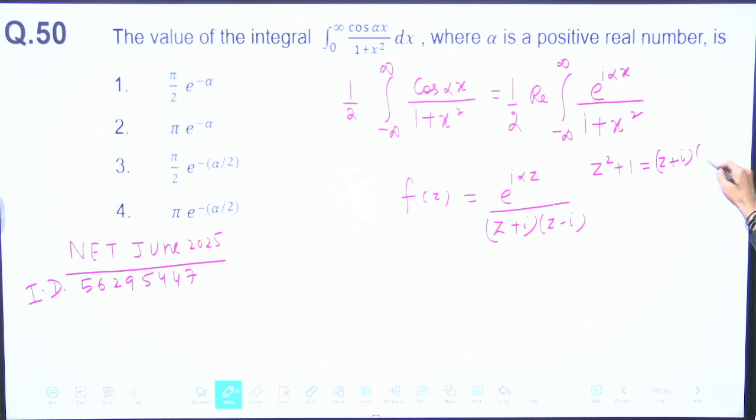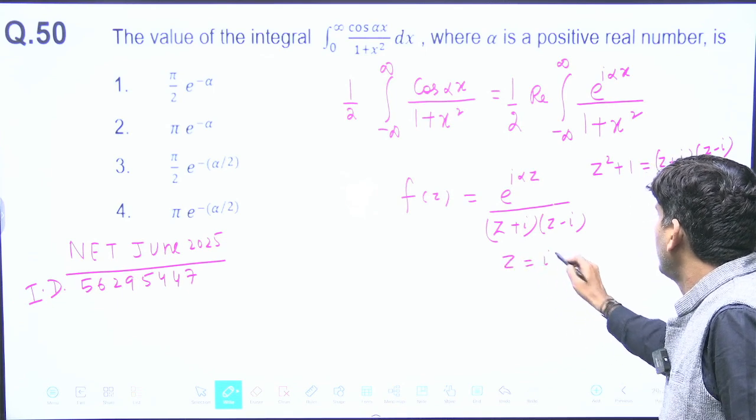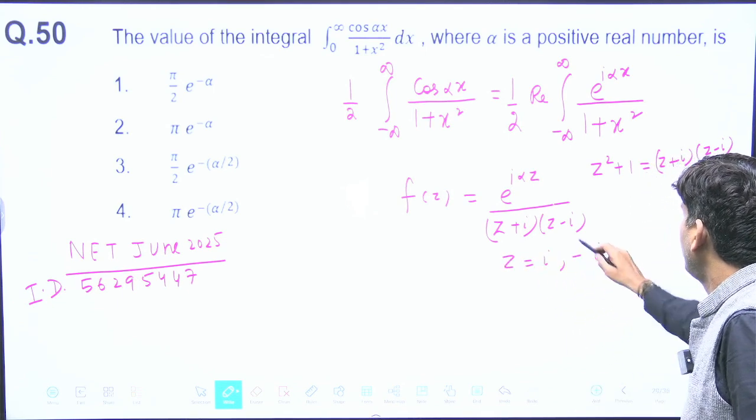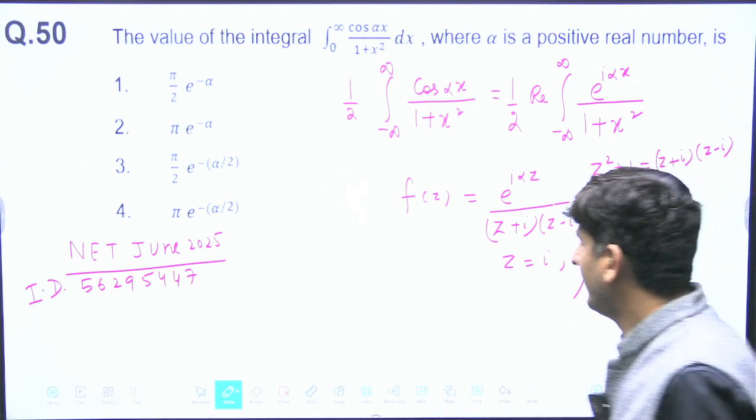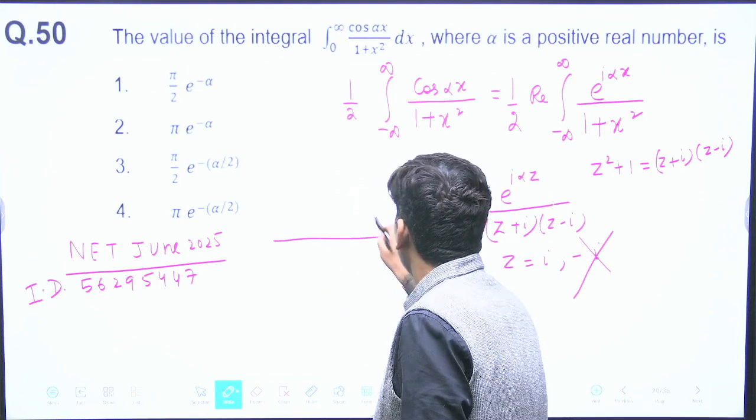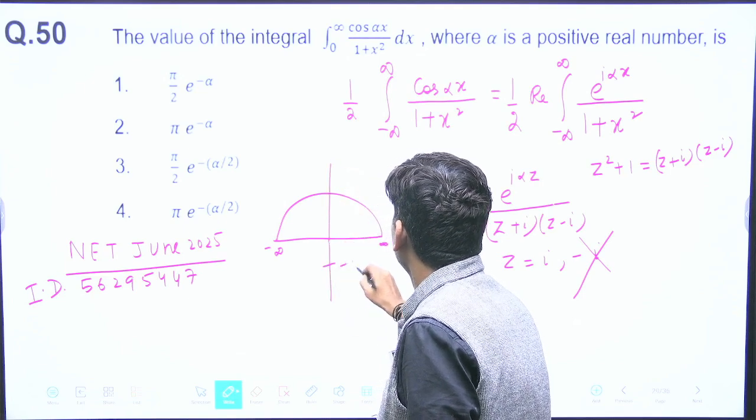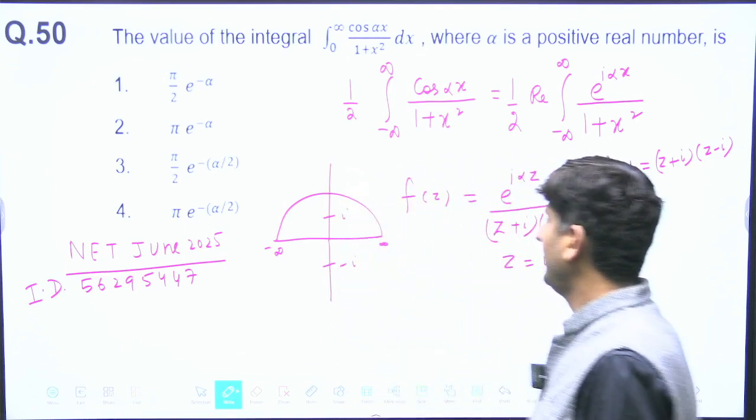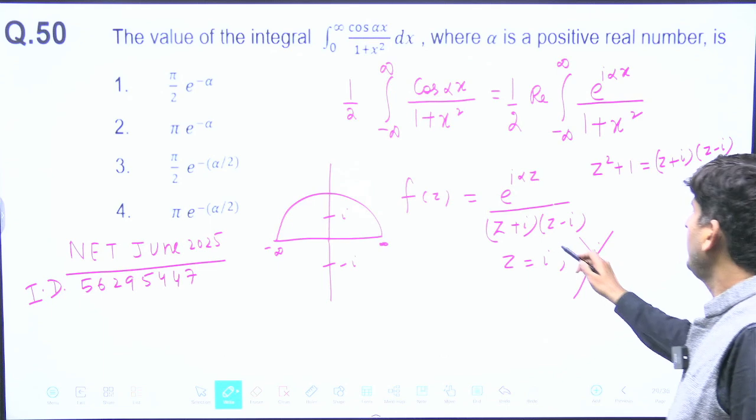You will get two poles: z equals i and z equals minus i. Minus i will be below our semi-infinite contour. The semi-infinite contour is like this: minus infinity to plus infinity. Minus i will be here, i will be here. So I have to write the residue only at z equals i.